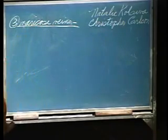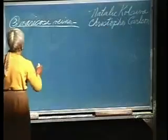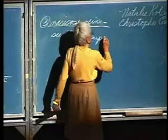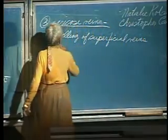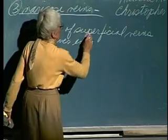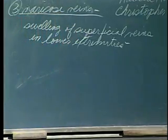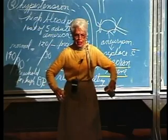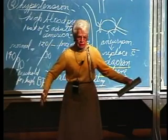Varicose veins is the swelling of superficial veins in lower extremities. What causes them? Obesity. You get all this fat up here, and there are no muscles contracting to keep those veins getting rid of the blood, so the veins swell.